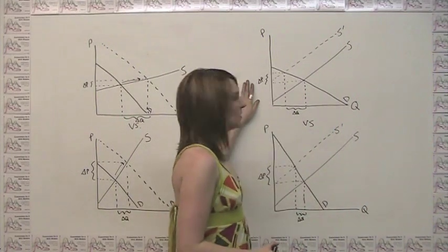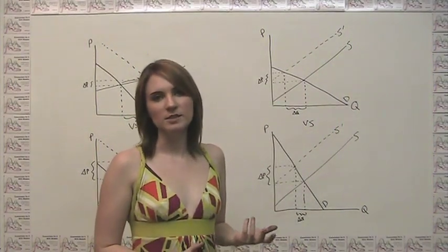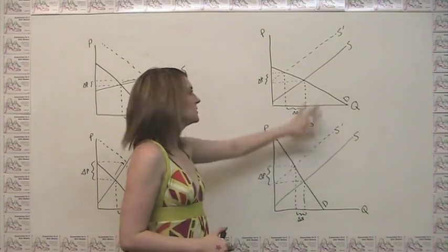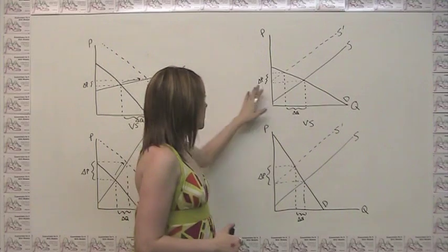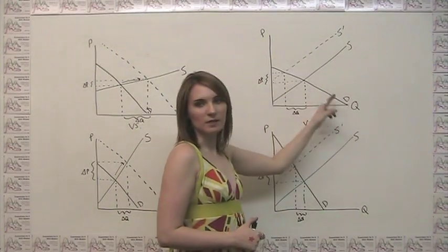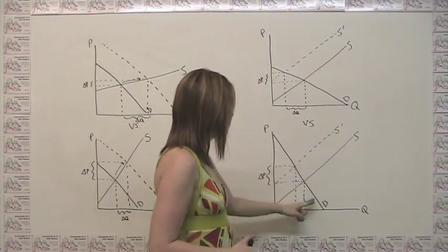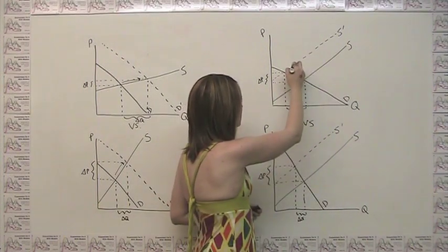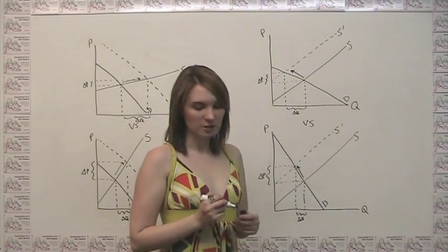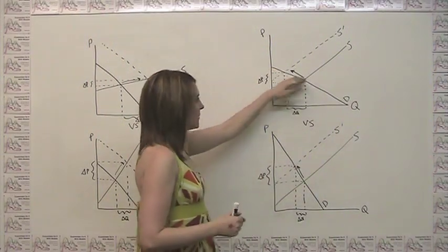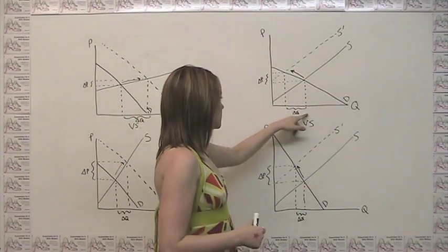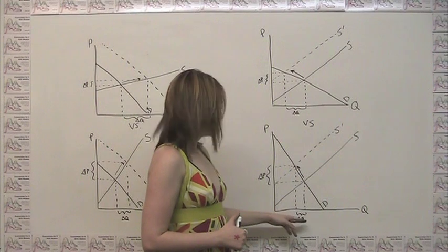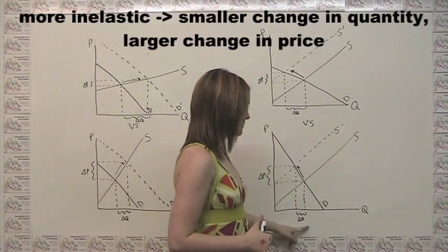We can see the same thing when thinking about changes in supply rather than changes in demand. I've drawn the same supply curve and the same change in supply in both cases. But in the first case I've drawn relatively elastic demand, and in the second case, relatively inelastic demand. Because when moving from one equilibrium to another we're moving along the demand curve, a flatter or more elastic demand curve gives a larger change in quantity compared to price, while a more inelastic demand curve gives a larger change in price compared to quantity.